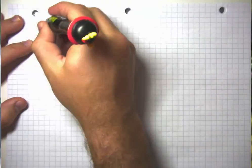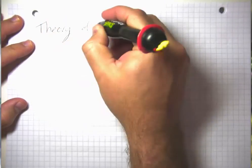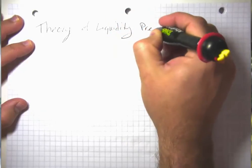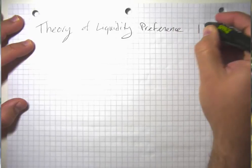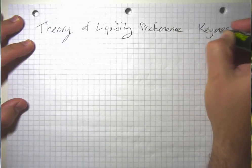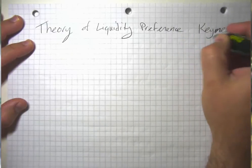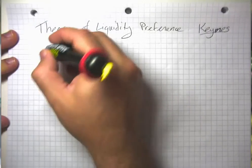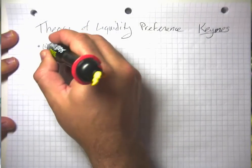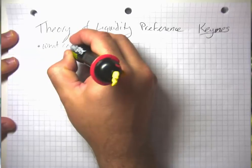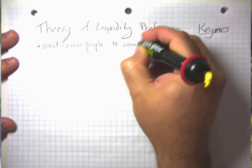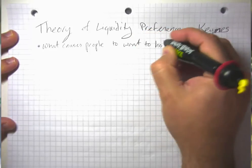So in this video segment, I'm going to talk about what's called the Theory of Liquidity Preference. And this was invented by Keynes, who's the founder of modern short-run macroeconomics. And the idea here is what causes people to want to hold liquid money?